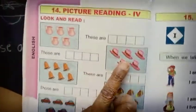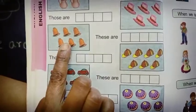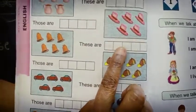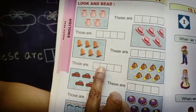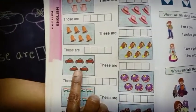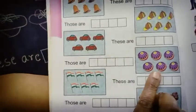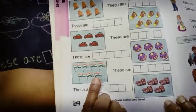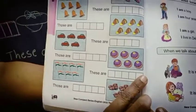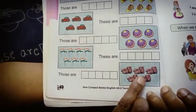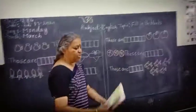H-A-T-S, Hats. What are those? Those are Cars. Those are Boxes — B-O-X-E-S, Boxes. These are Flags — F-L-A-G-S, Flags. Those are Shoes — S-H-O-E-S, Shoes. You have to write these in your sheets.